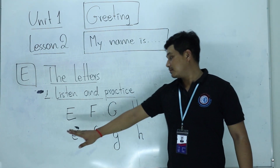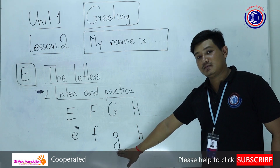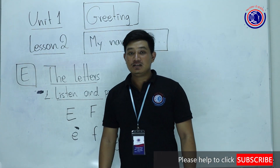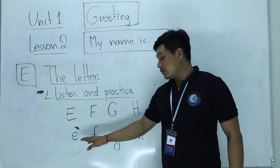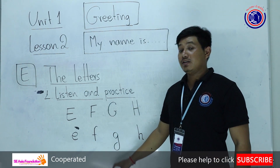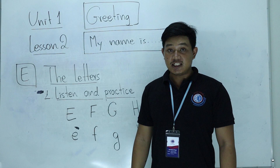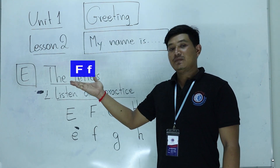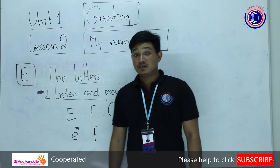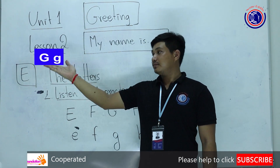Your turn. Now say in turn: when I say E, you say F. When I say G, you say H. Okay? Let's begin together. E… G… Now begin from you. F… H. You've done a great job.